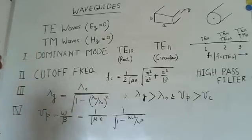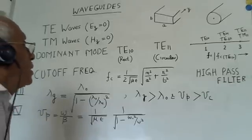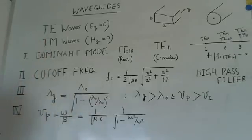Like TE01 and TE20 modes have twice the cutoff frequency of TE10 mode. And TM11 and TE11 modes have about three times the frequency of the cutoff of TE10, the dominant mode.